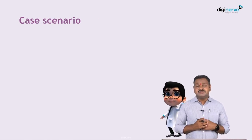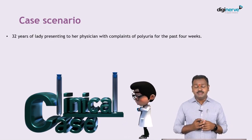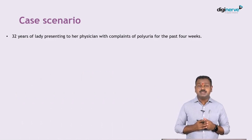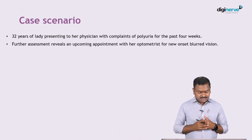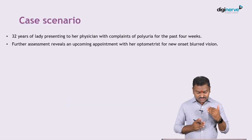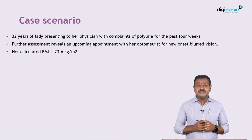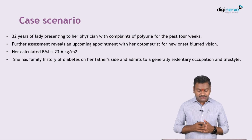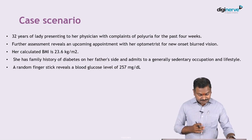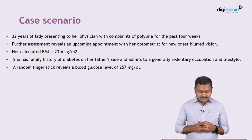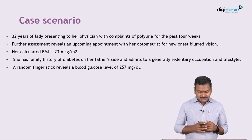Let's begin with a case scenario. We have a 32-year-old female who comes to the physician with complaints of polyuria for the past four weeks. On further assessment she reveals that an upcoming appointment to her optometrist revealed blurred vision. Her BMI is 23.6, she has a strong family history of diabetes from the father's side, admits to a sedentary lifestyle, and a random blood sugar reveals 257 milligrams per deciliter.